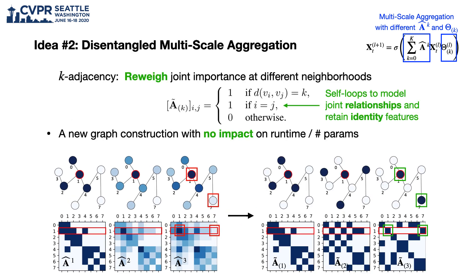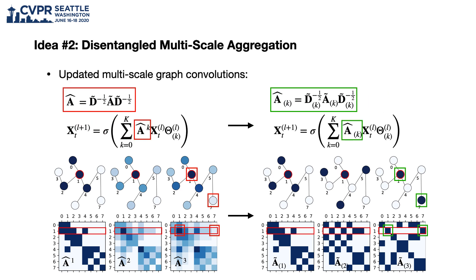Ideally, we want to remove this bias so that we can model long-range dependencies more effectively. We therefore propose a simple method where we explicitly reset edge weights at each neighborhood. We do so by constructing k-adjacencies, where a pair of nodes share an edge if and only if they are k-hops apart. Note that we keep node self-loops to reason about node relationships, as well as keeping identity information when no k-hop neighbors are available. The resulting multi-scale graph convolution simply involves replacing the normalized adjacency powers with the normalized k-adjacencies.